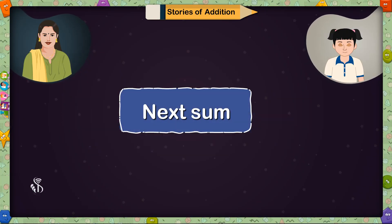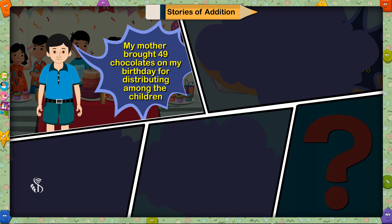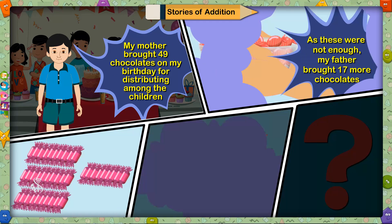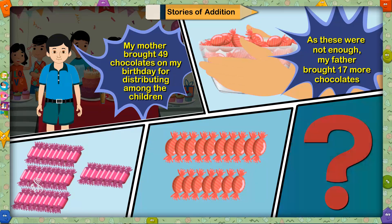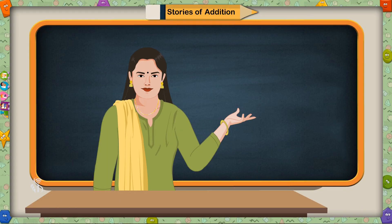Next sum is 49 plus 17. Madam, I will make a story for this. My mother brought 49 chocolates on my birthday for distributing among the children. As these were not enough, my father brought 17 more chocolates. How many chocolates were brought on my birthday in all? Well done. This means you have understood very well how to make addition stories.